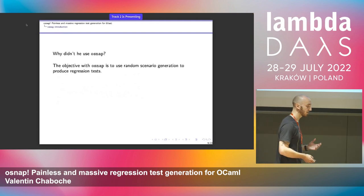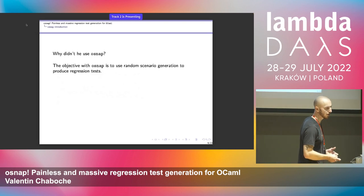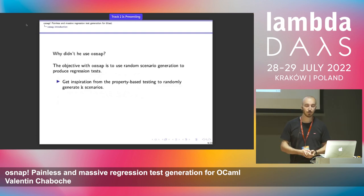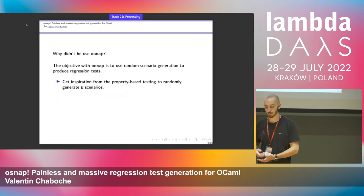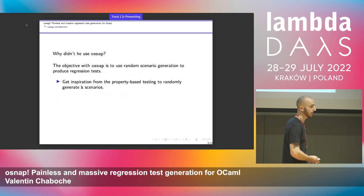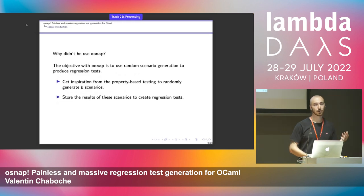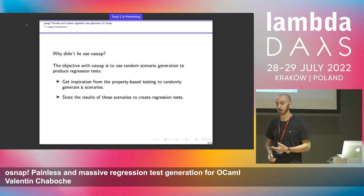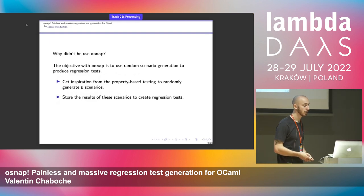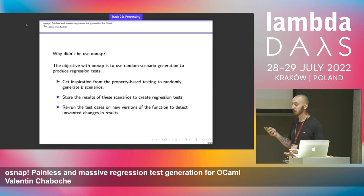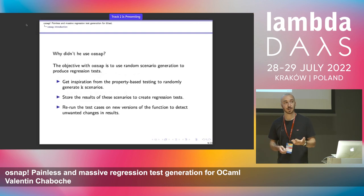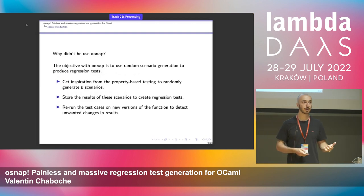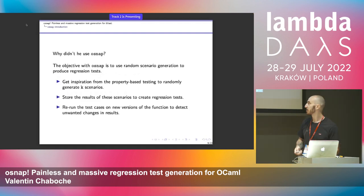The objective of OSNAP is to mix the last two approaches and use random scenario generation to create scenarios for a function. You execute the scenarios on a function, store the results on disk, and there will be a regression test using these scenarios and their outputs. Every time you change the function, you rerun the test cases on the new version and find any unwanted changes in the results.